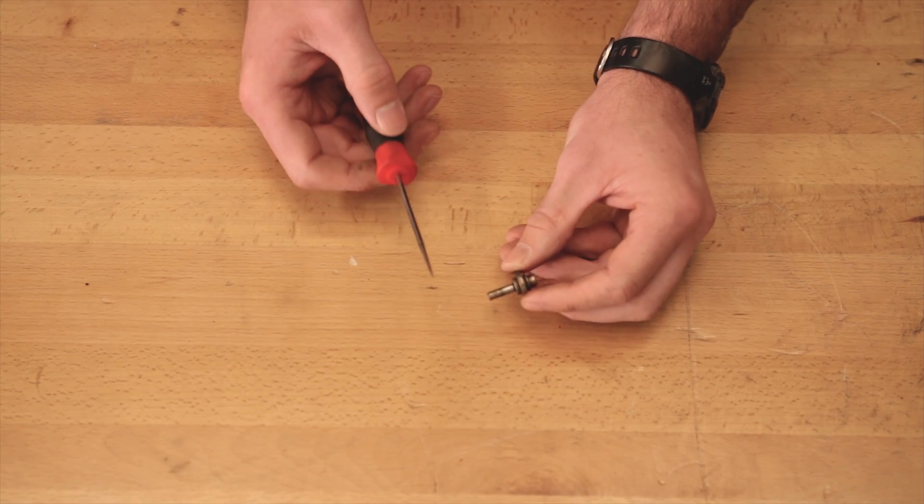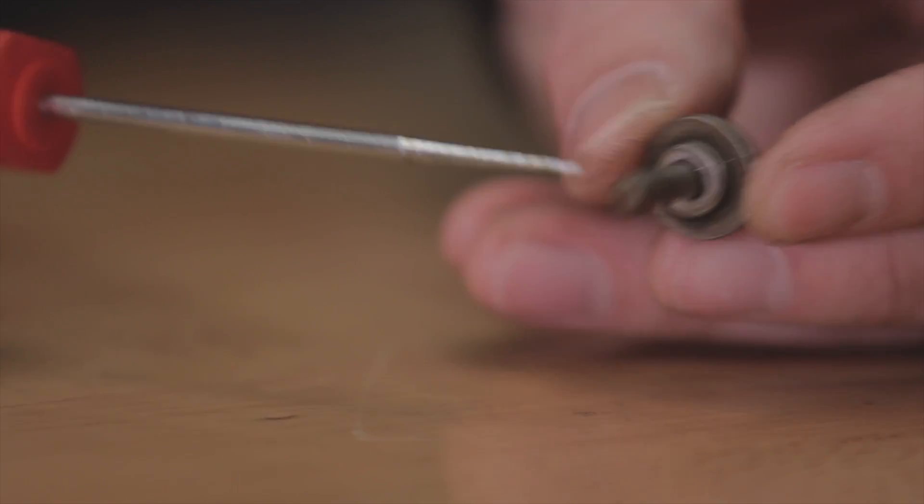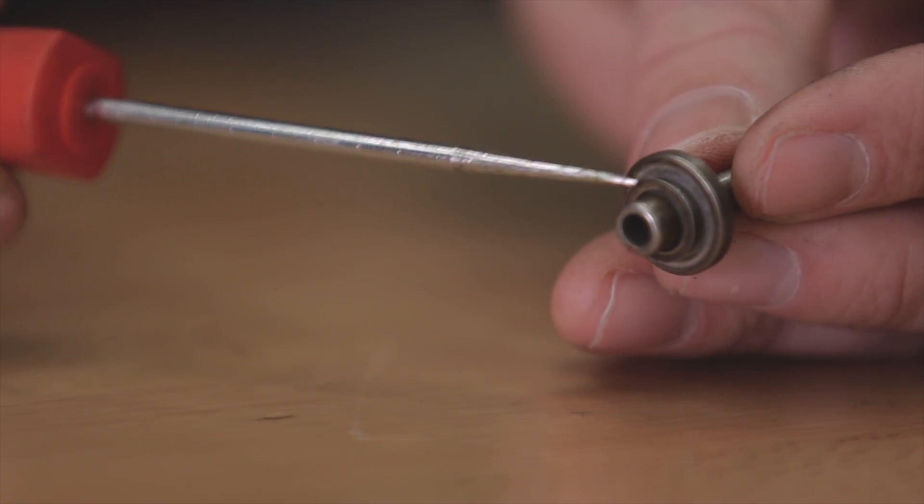Next, you can inspect your check valves. They'll need to be replaced if there's any ripple on the stem or any damage to the O-ring ledge.